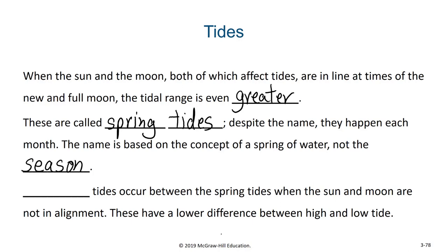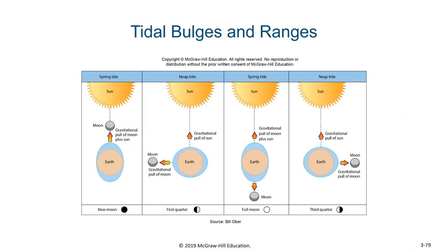Conversely, at the one-quarter moon and three-quarter moon, where the moon and the sun are not aligned with each other, these produce the neap tides. During the neap tides, you're going to have a lower difference between high and low tide, and neither will be as extreme as during the spring tides. When the sun and moon are aligned, high tide will be taller and low tide will be lower, whereas during a neap tide the difference between high tide and low tide will be reduced.